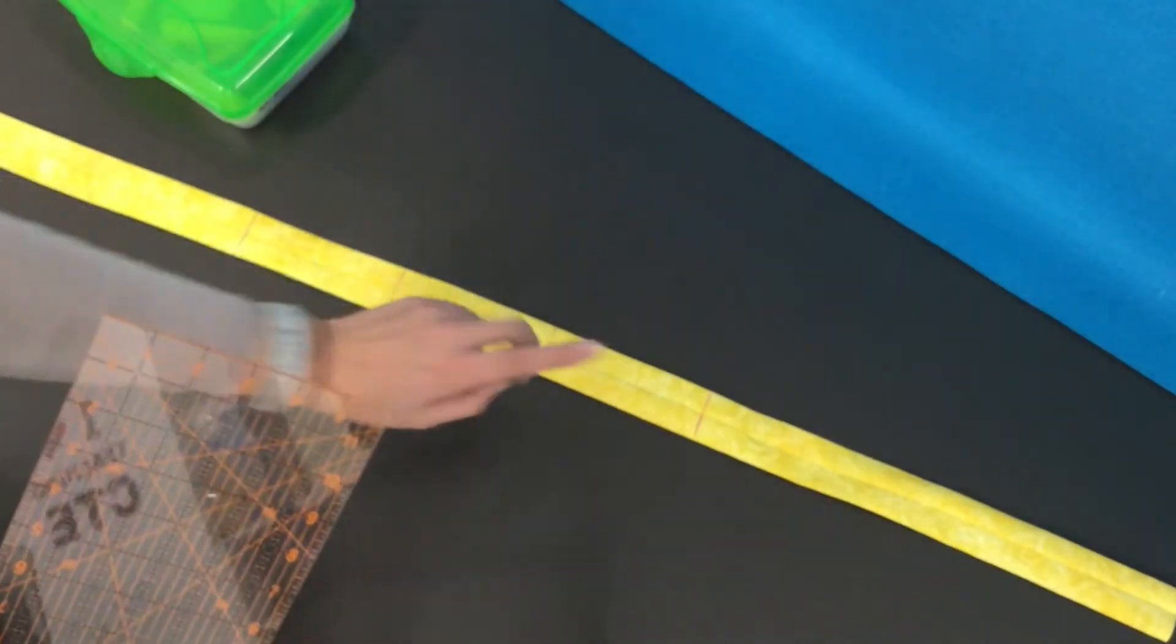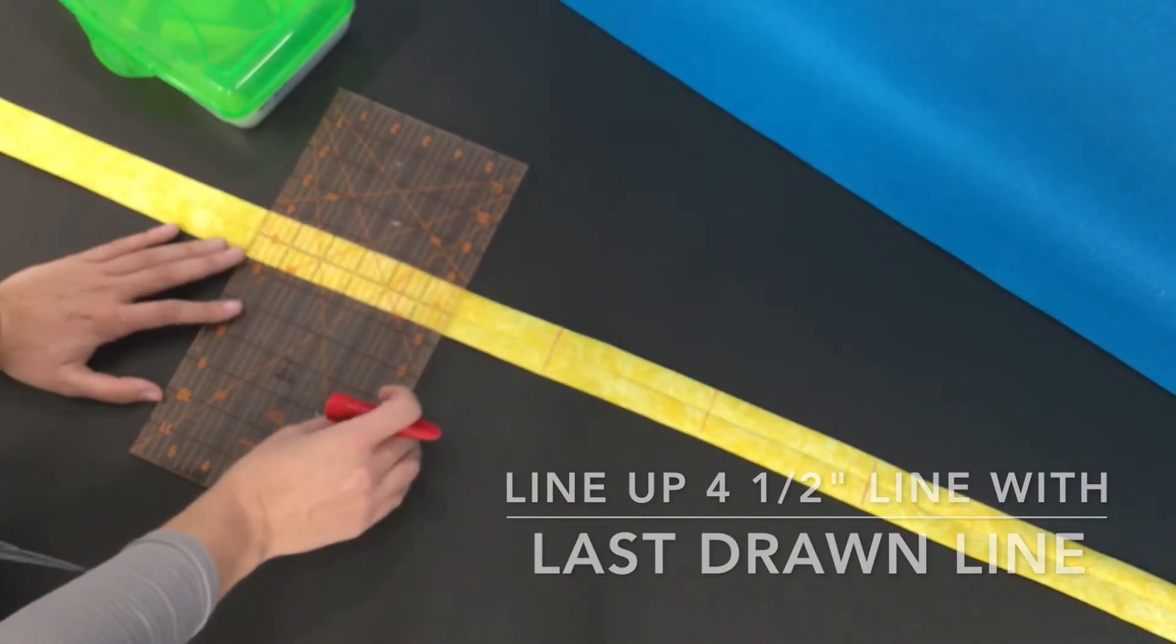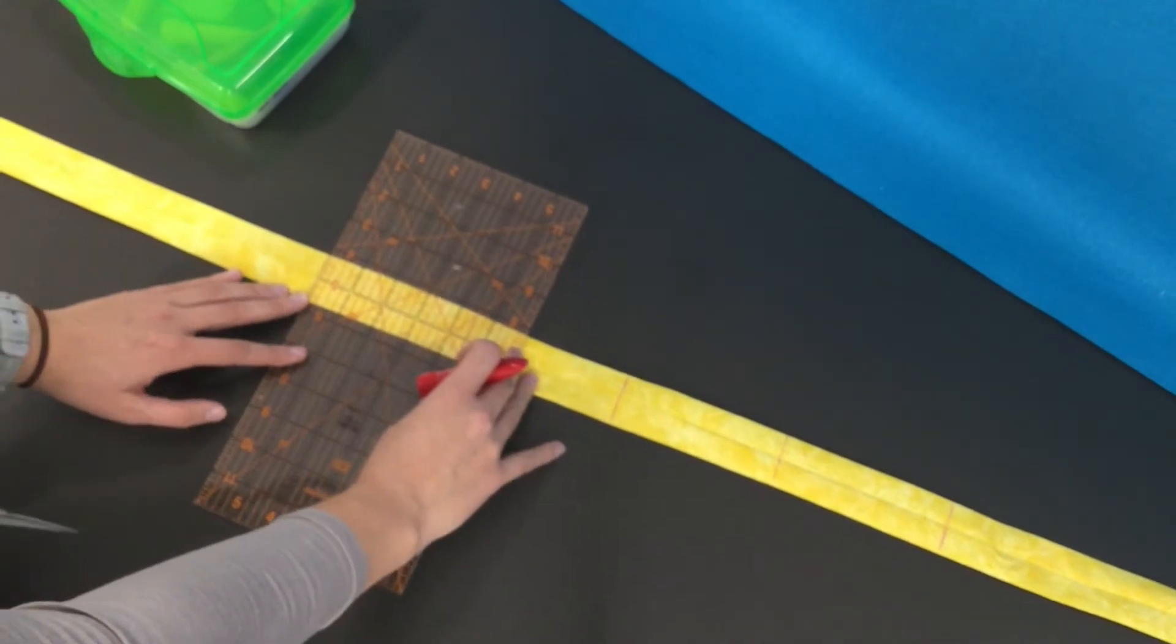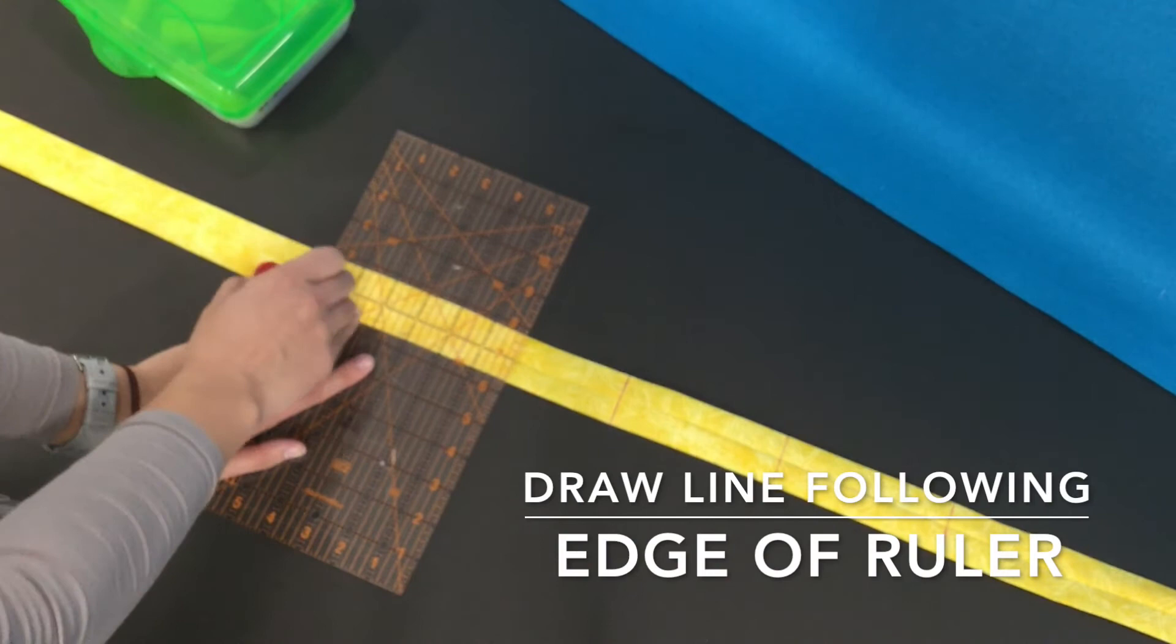And draw me another line. So I have one, two, three pockets. I need four. Scoot this down. Line up my four and a half inch line. And draw me another mark.